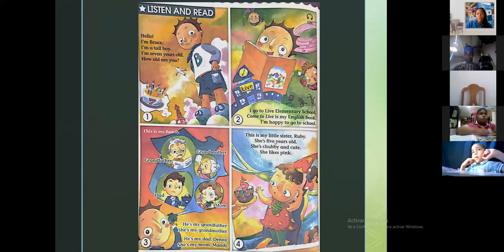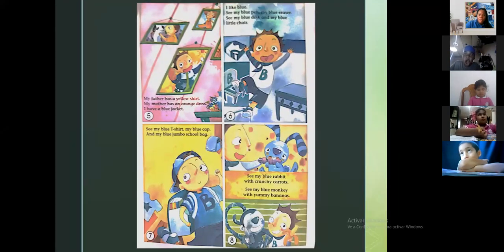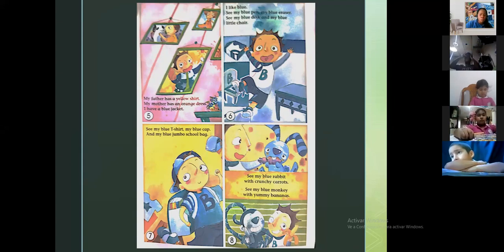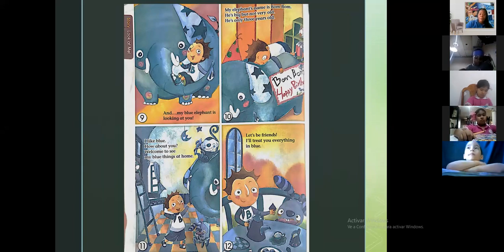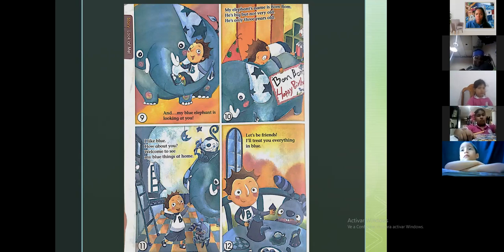Sabemos que él tiene un abuelo, una abuela, un papá y una mamá. Tiene una hermana que tiene cinco años, que es gordita y que es linda, y que le gusta el color rosado. También sabemos de Bruce que su papá utiliza un suéter amarillo y su mamá un vestido naranja, y que Bruce usa un jacket azul. También sabemos que le gusta el azul, que todos sus objetos son azules como su bolígrafo, su silla, su borrador. También es azul, también sabemos que tiene una gorra azul, que tiene un suéter azul y que tiene una bolsa grandota azul. Que su conejo es azul, que su mono es azul, que su conejo come zanahorias crujientes y que su mono come manzanas sabrosas. También sabemos que Bruce tiene un elefante azul que se llama Boom Boom, que no es tan viejo, que no es viejo pero si es grande, que solamente tiene tres años. Sabemos que todas las cosas en la casa de él son azul y que él quiere ser tu amigo. Eso sabemos de Bruce.